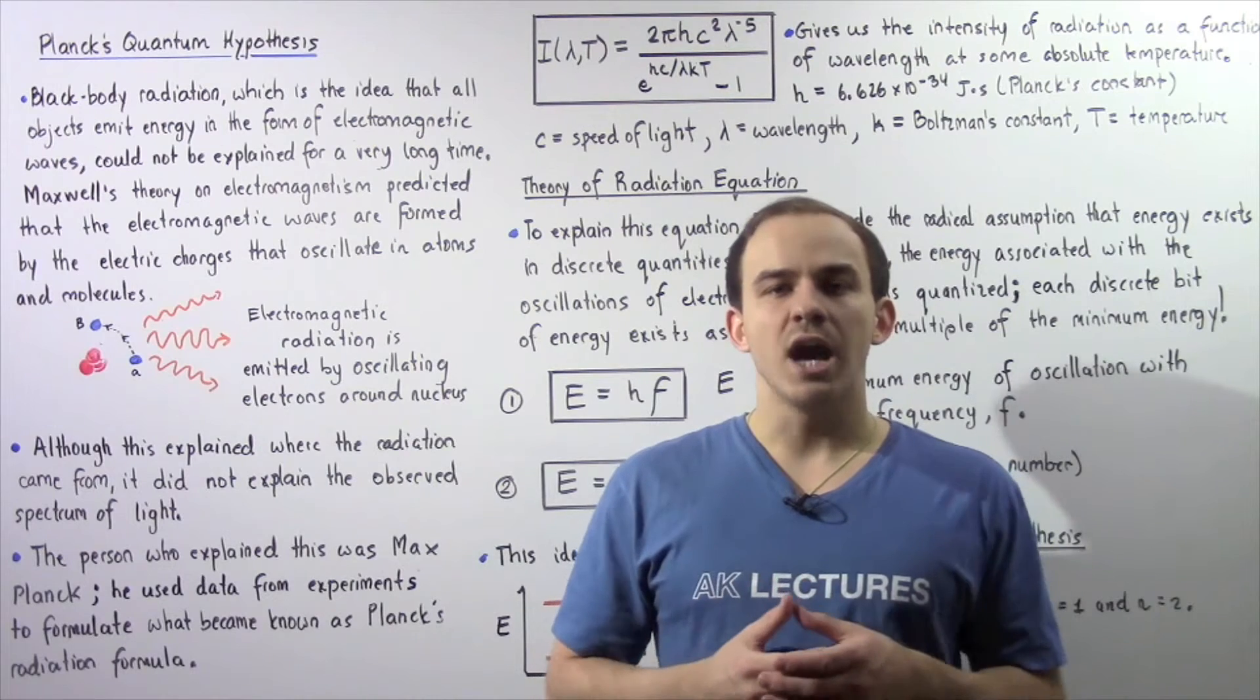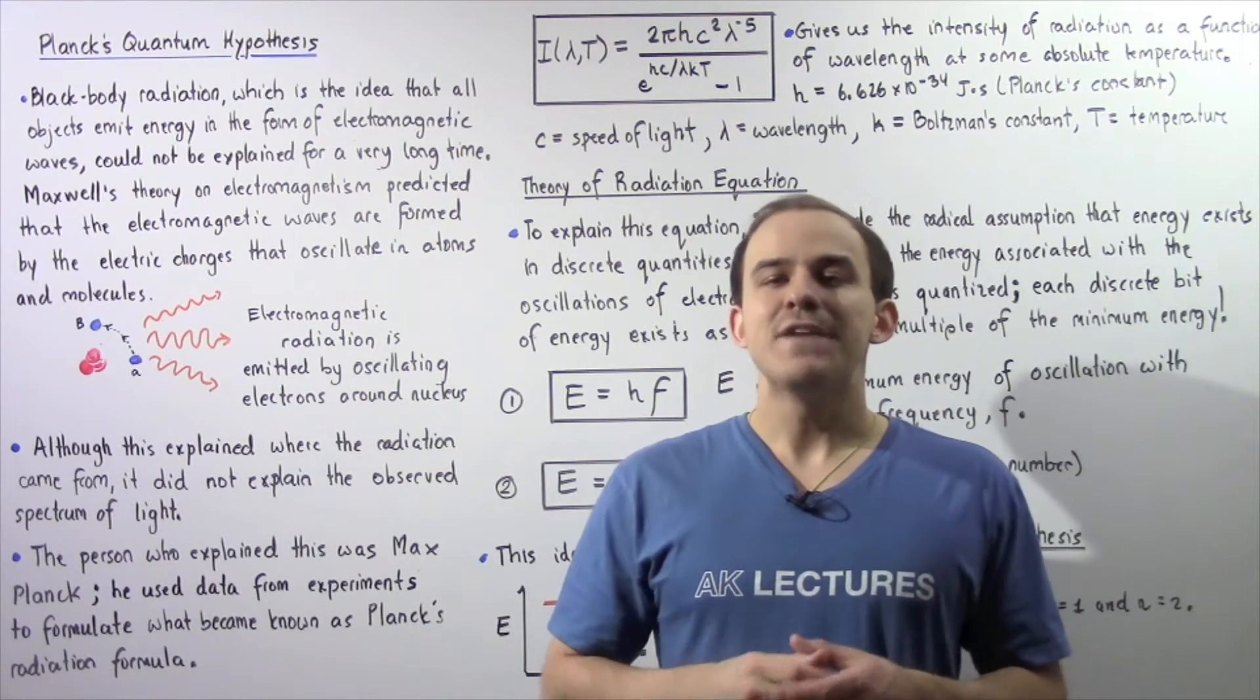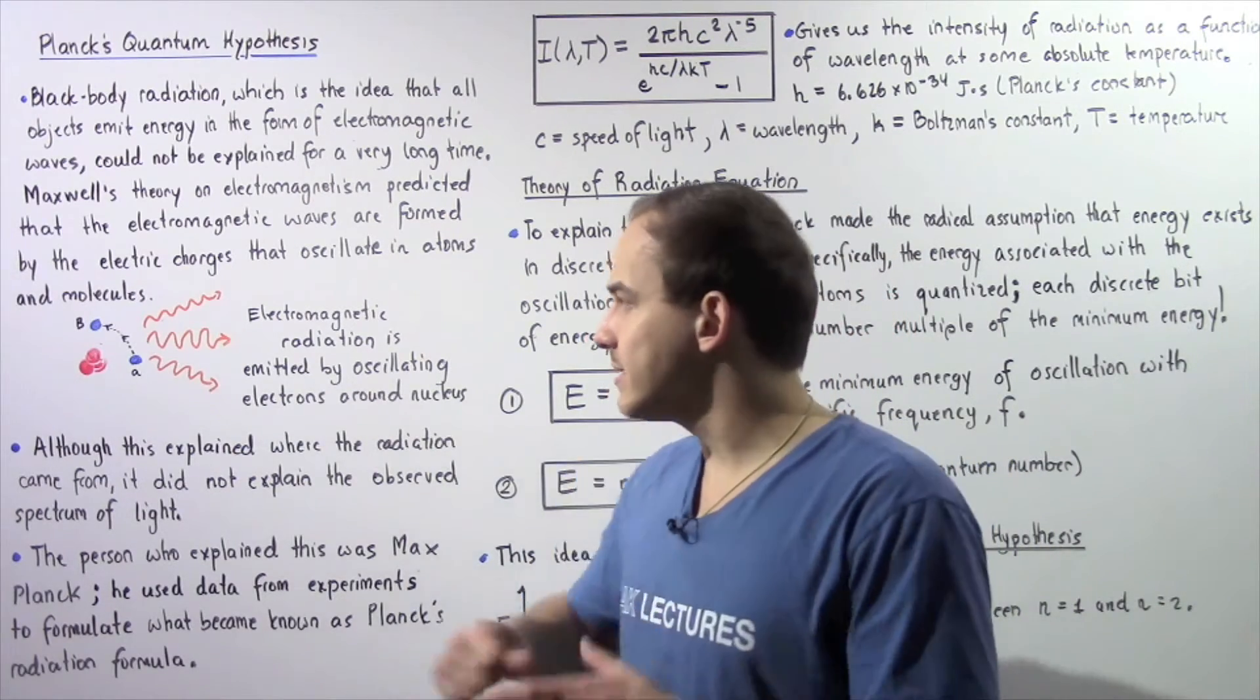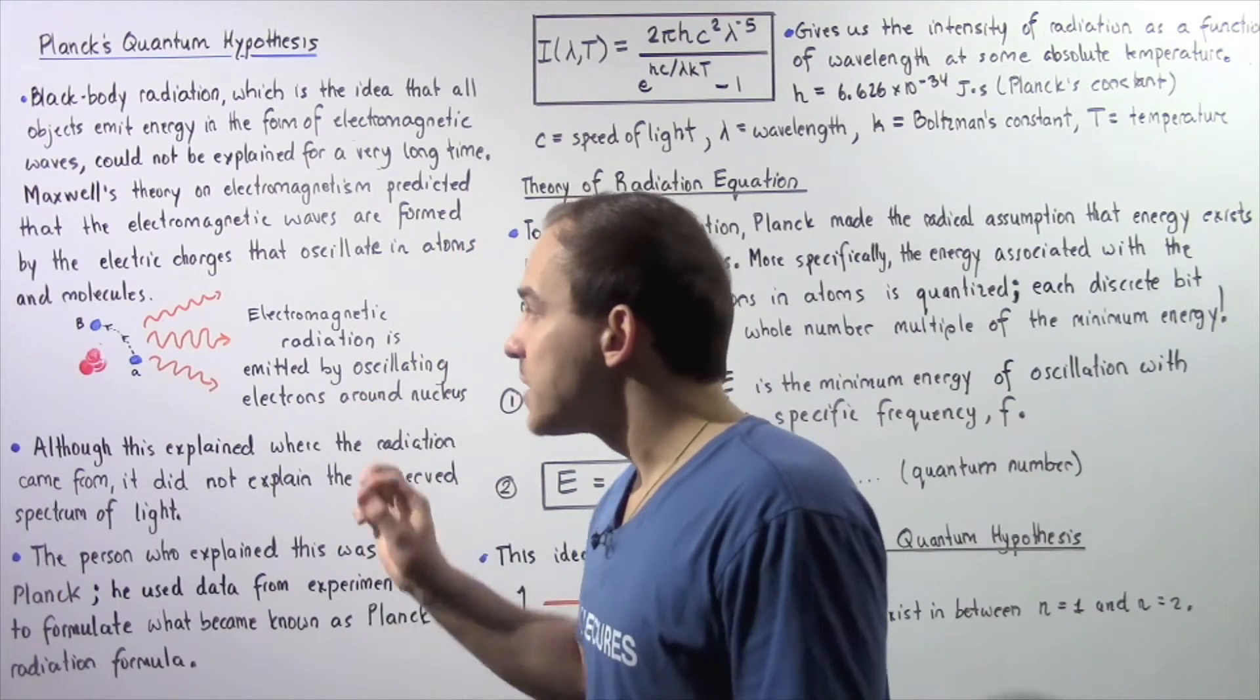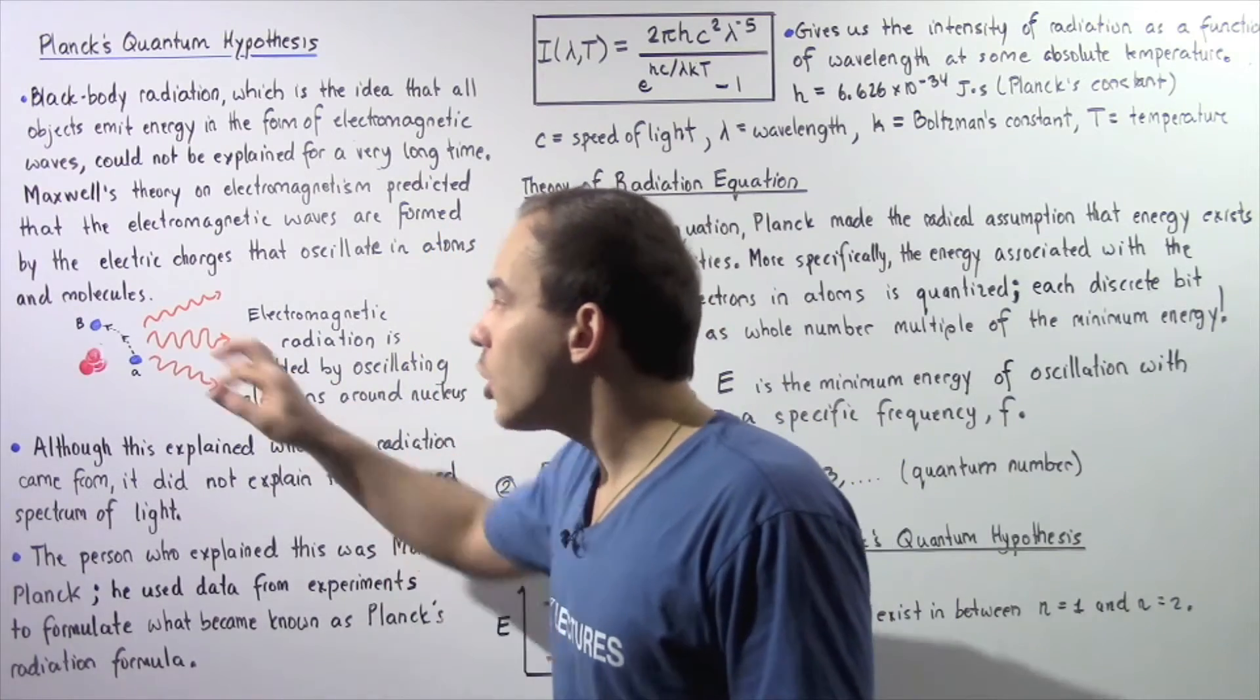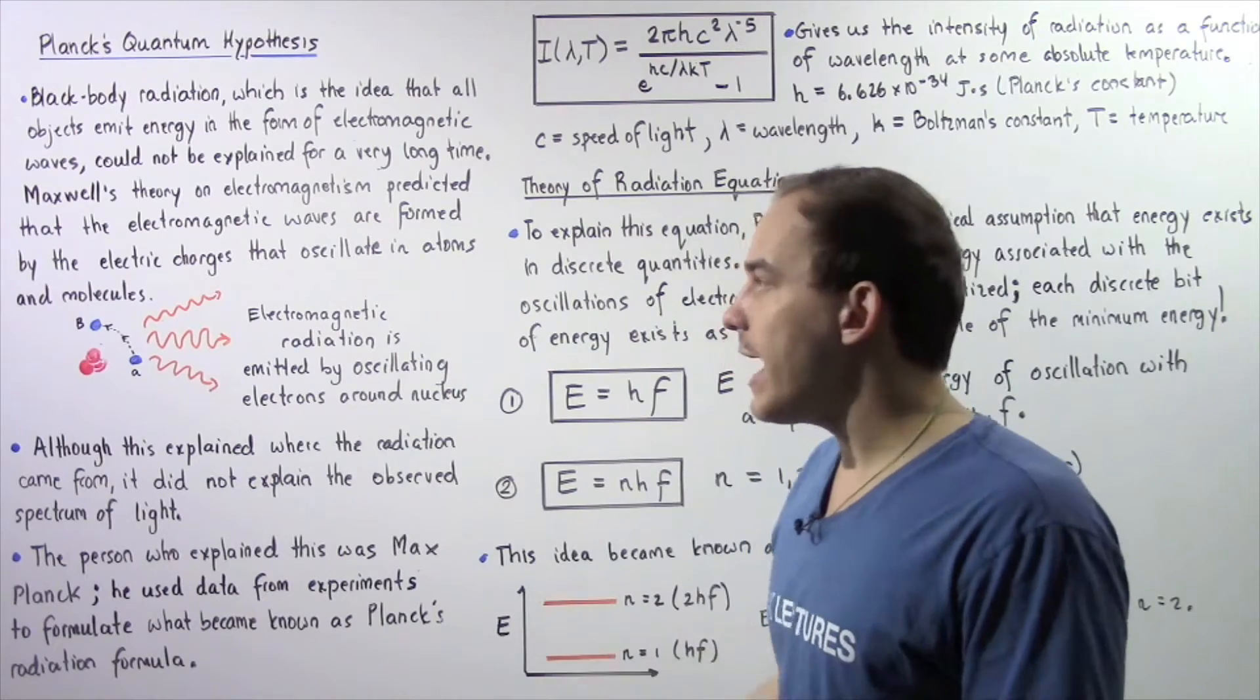Now Maxwell's theory on electromagnetism predicted that these electromagnetic waves are emitted as a result of the oscillations of the electric charges found inside atoms and molecules within our objects. So basically, when the electrons found within the atom oscillate from position A to position B, those oscillations release electromagnetic waves.